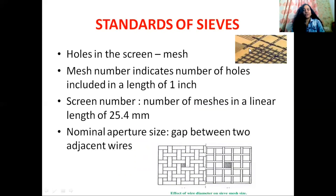Now let's move on to the standards of sieves. Mesh means the holes which are present in the screen. Mesh number indicates the number of holes included in a length of one inch. Screen number means the number of meshes in a linear length of 25.4 mm. Nominal aperture size means the gap between two adjacent wires — the gap between these two wire edges is known as nominal aperture size.